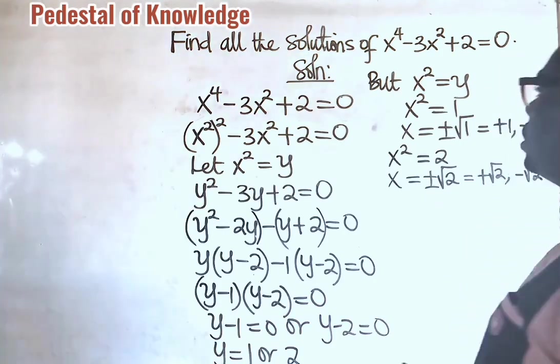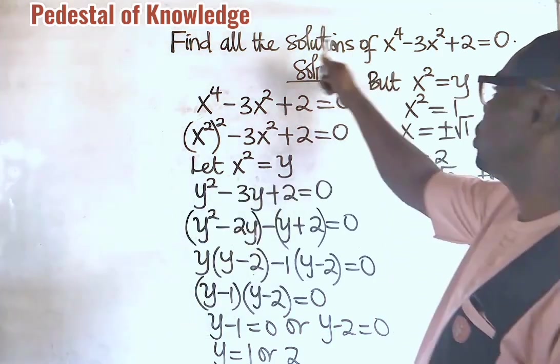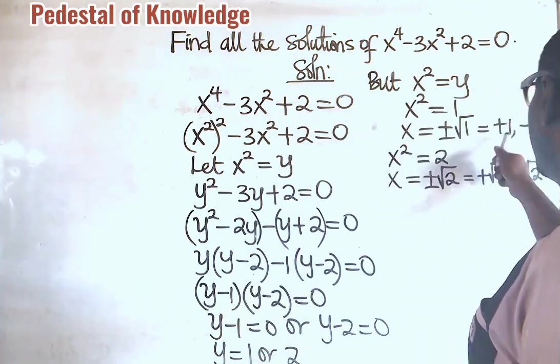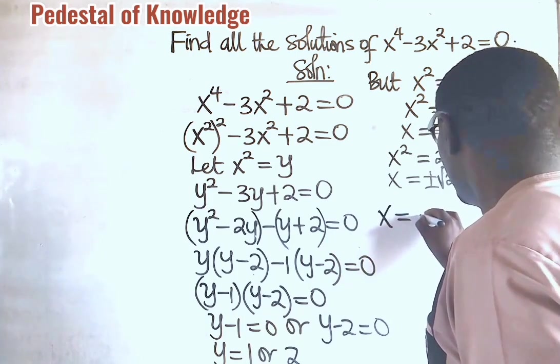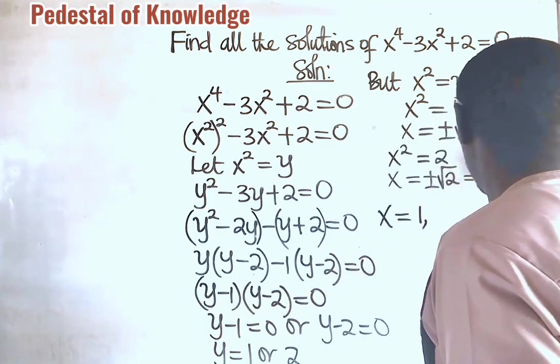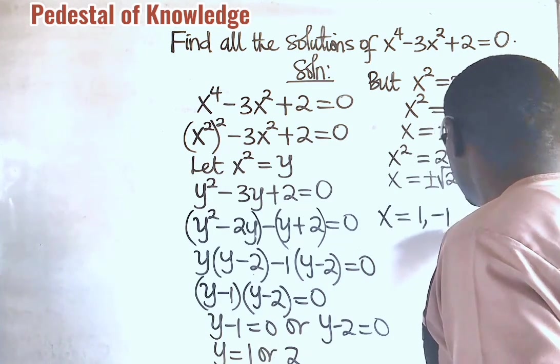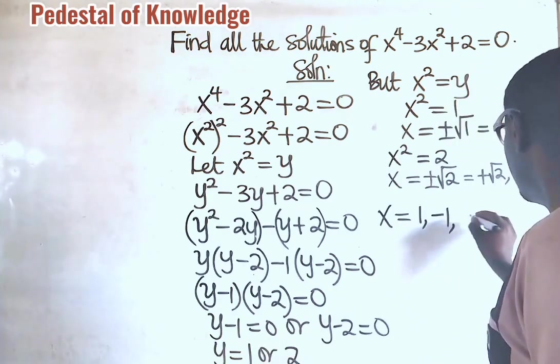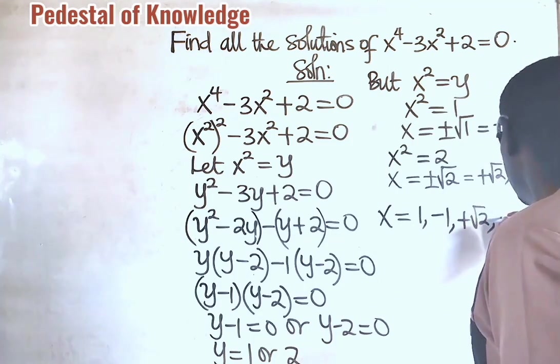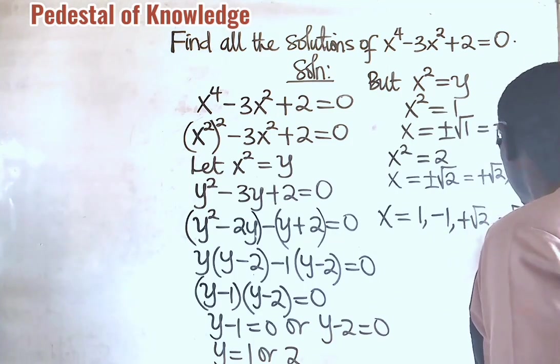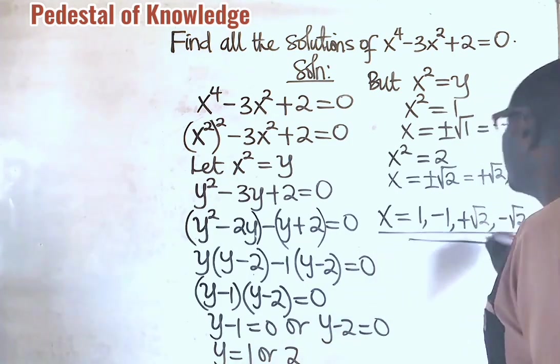So, it then means that all the solutions of this polynomial are, from here, we have x is equal to 1, we have the second one, minus 1, then we have the third plus root 2, and the last is minus root 2. So, these are the solutions of that polynomial.